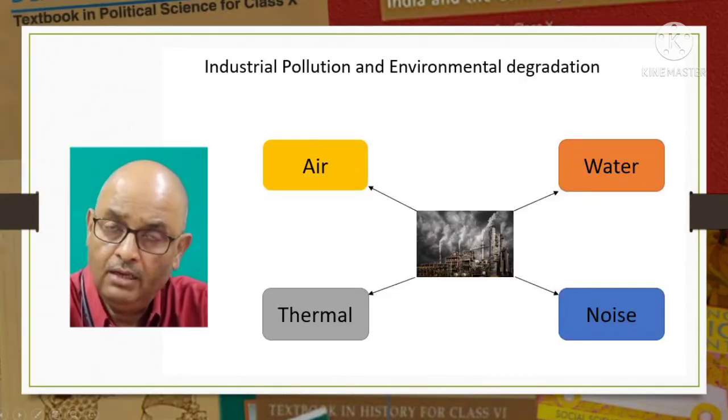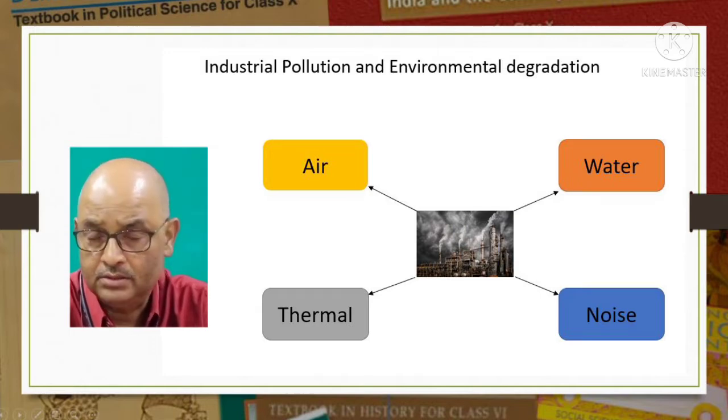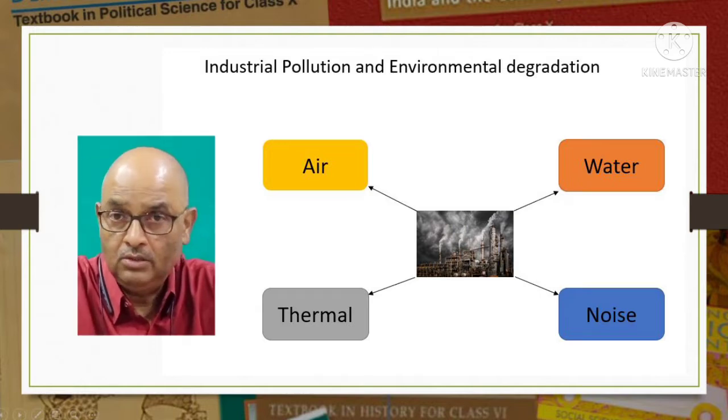Recall sustainability of development - development should take place without damaging the environment. One way to achieve sustainable development is to find out ways to stop environmental pollution, that is why this topic becomes important. Industries are responsible for four types of pollution: air, water, thermal and noise. The polluting industries also include thermal power plants.